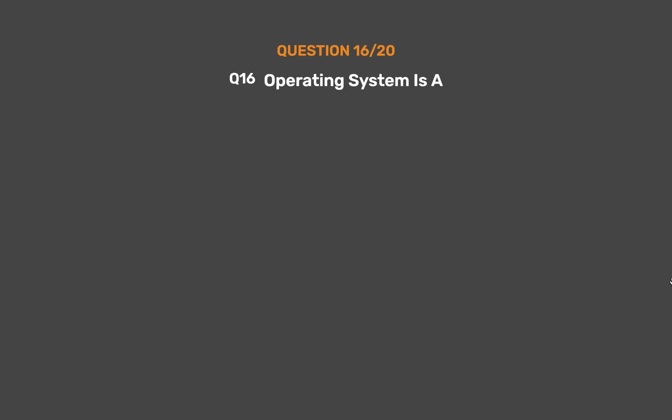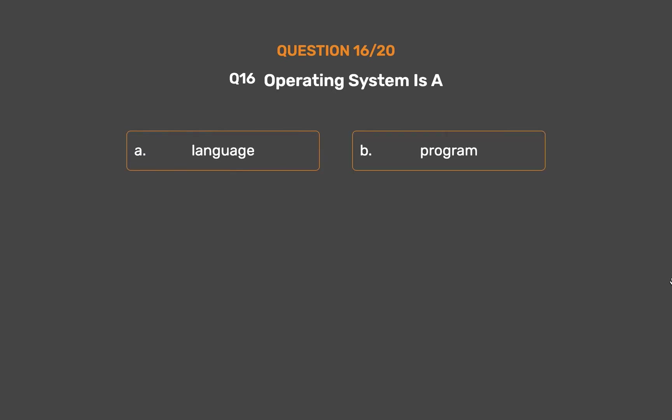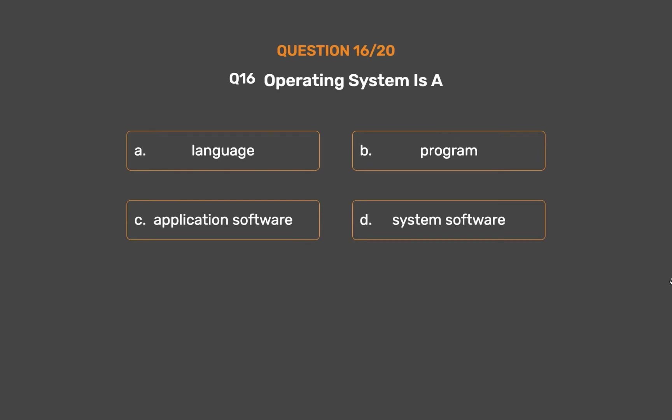Question number 16. An operating system is: Option A: Language. Option B: Program. Option C: Application software. Option D: System software.